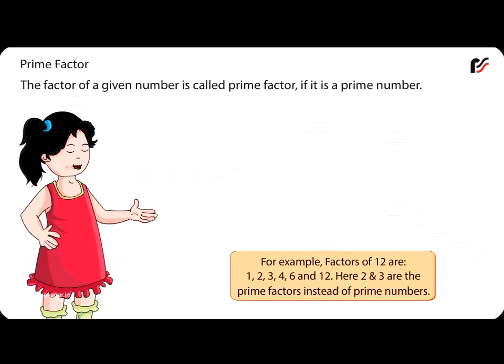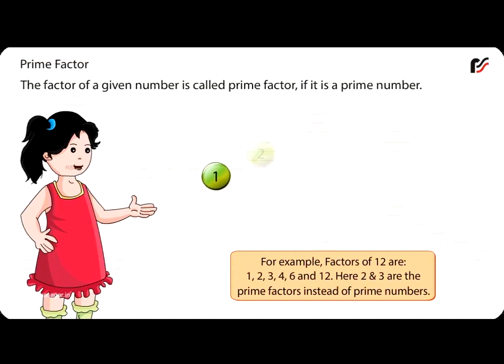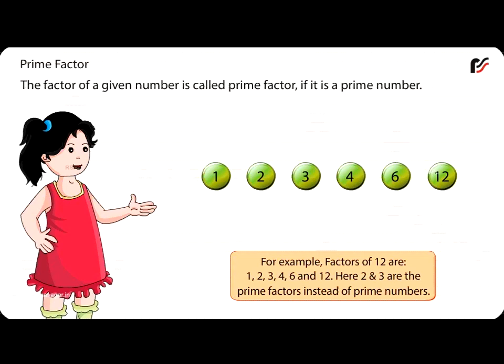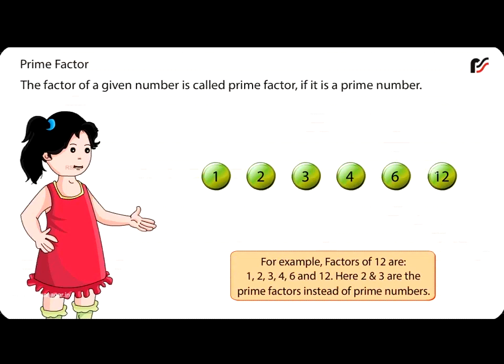For example, factors of 12 are 1, 2, 3, 4, 6 and 12. Here, 2 and 3 are the prime factors, as they are prime numbers.